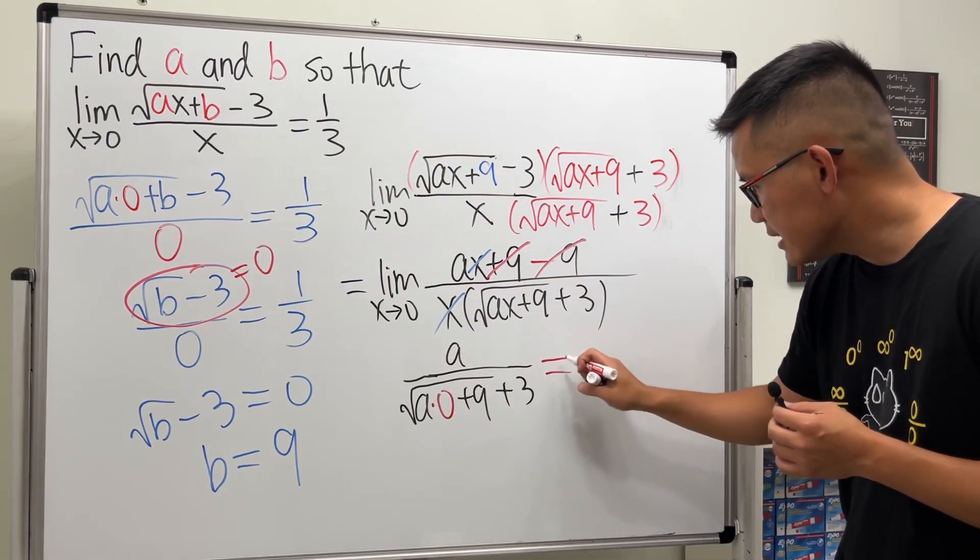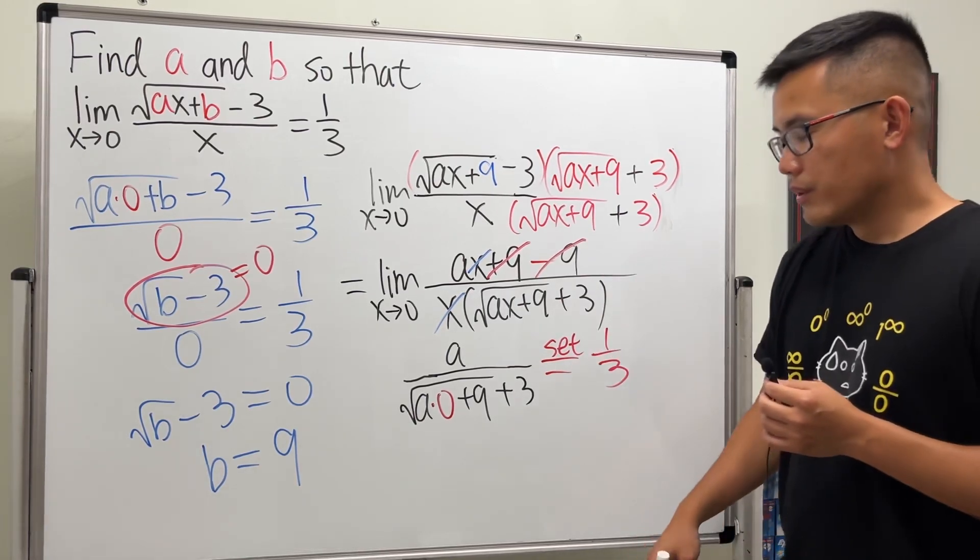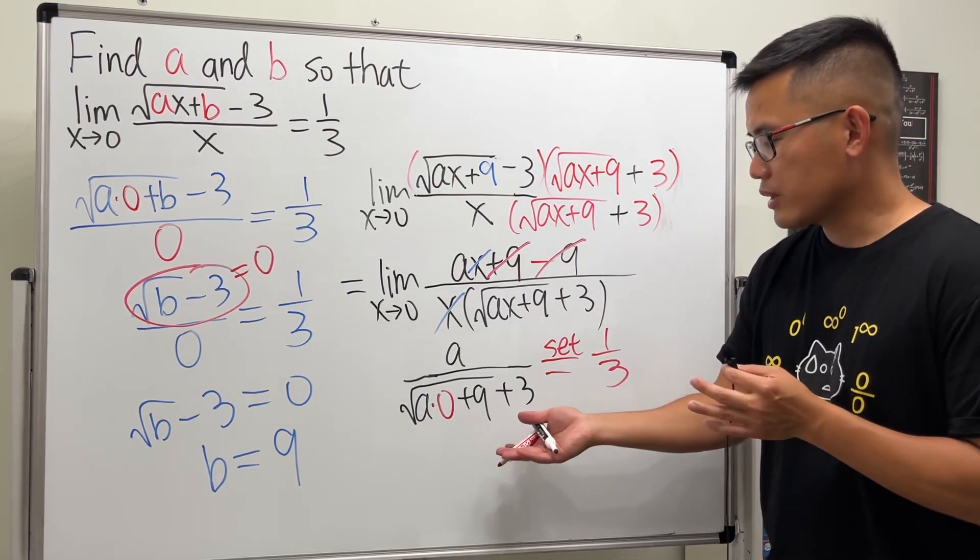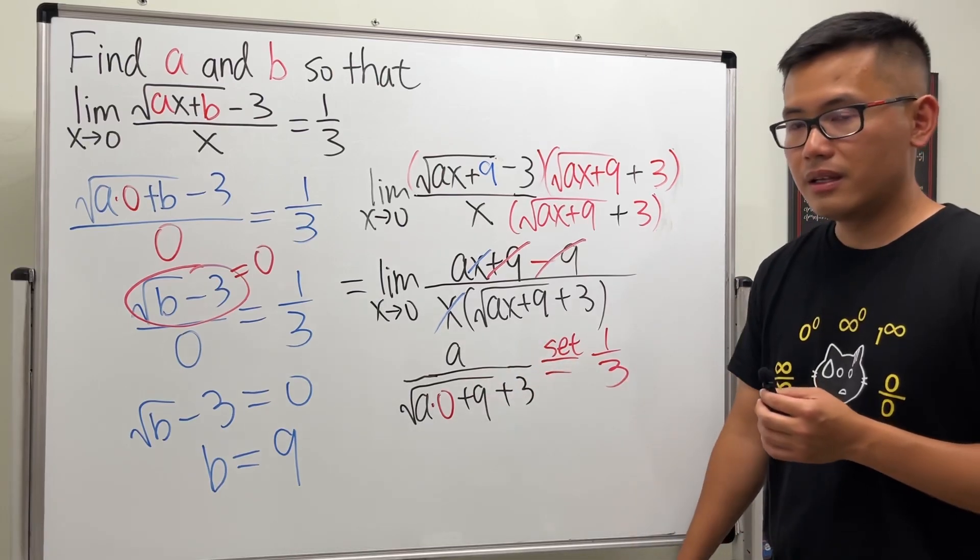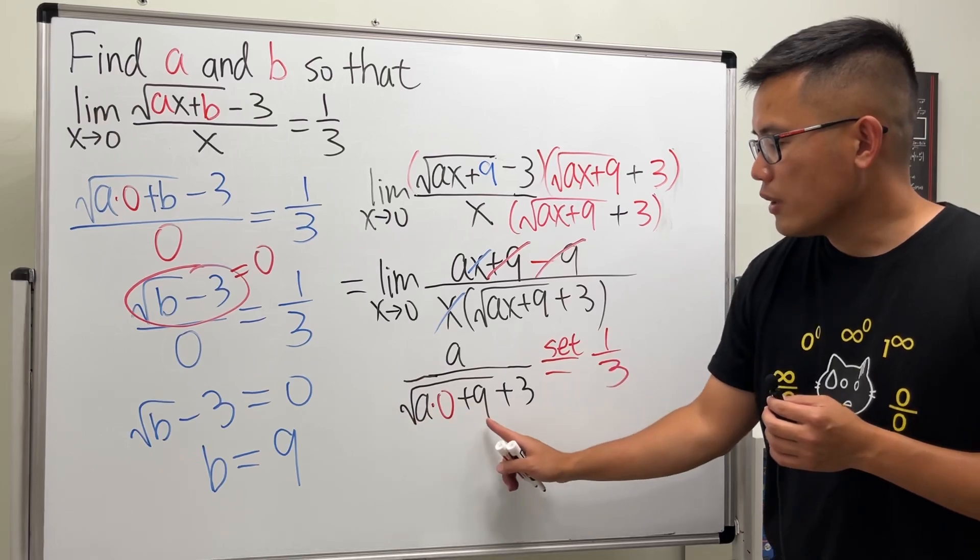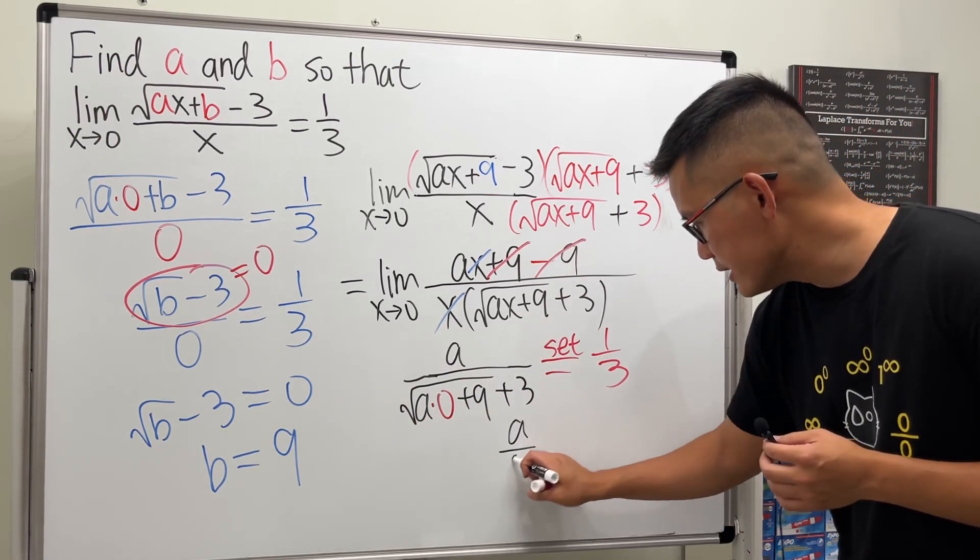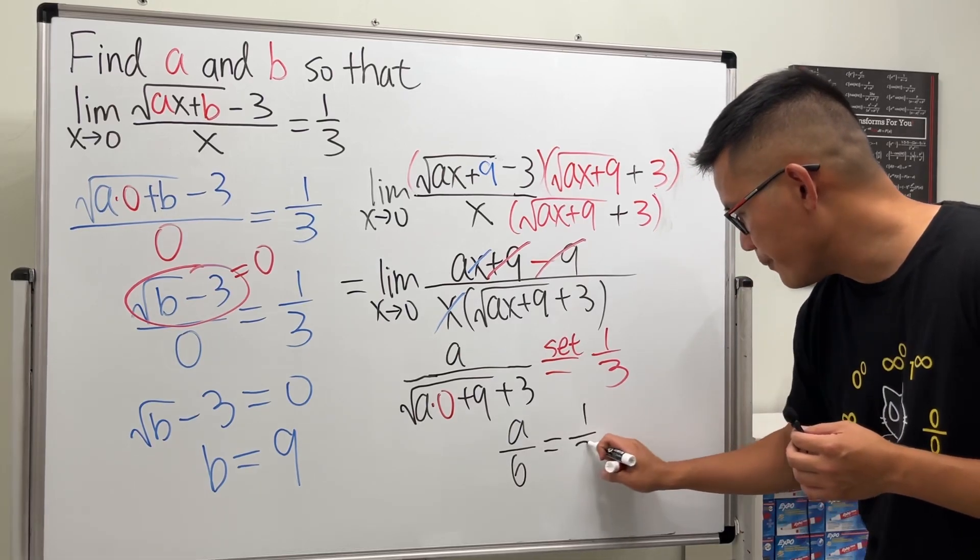So this is what we have after we plug in x equal to zero. And don't forget that we want the result to be one third, so we are going to look at this and set this to be one third. Thankfully, with all this, we can actually just solve for a very nicely.